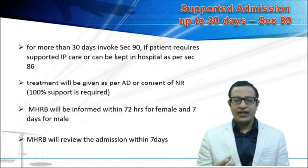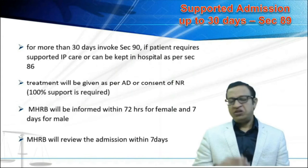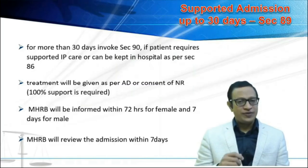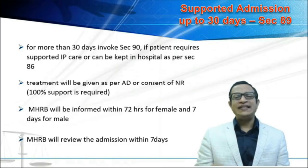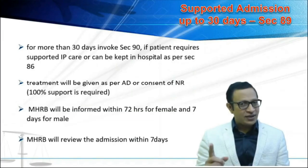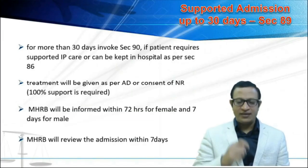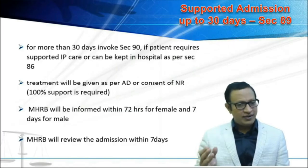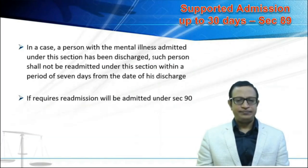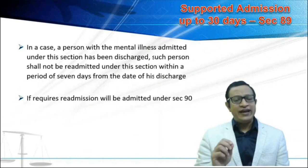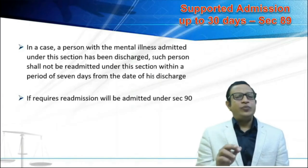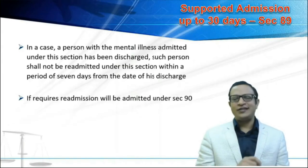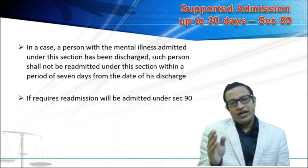If a person admitted under section 89 does not improve even after 28 or 29 days, section 90 must be invoked and a request to the MHRB must be sent, informing that the patient is being placed under section 90. The patient should not have capacity at that time, and the NR must give consent for continuation of treatment. MHRB needs to be informed within 72 hours for a female and within seven days for a male. If a person is discharged and needs to be readmitted within seven days, the readmission must be under section 90, not section 89.